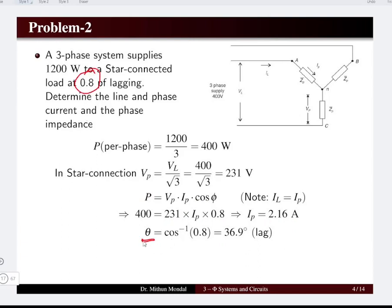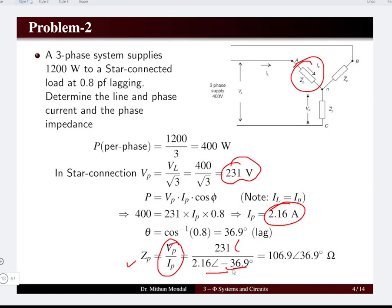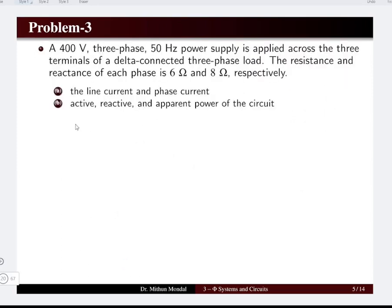The power factor is 0.8 lagging, so the phase angle θ = cos⁻¹(0.8) = 36.9°. The impedance per phase is obtained by dividing the phase voltage by the phase current: Z = 231∠0° / 2.16∠−36.9°, giving approximately 106.9∠36.9° ohms.